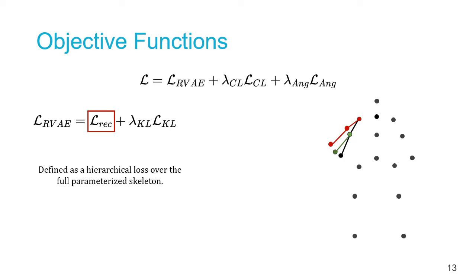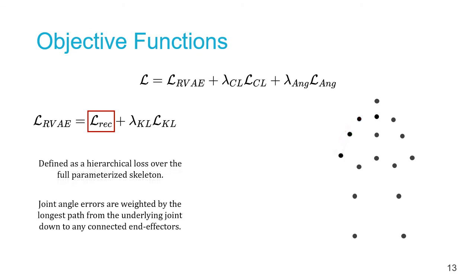However, applying forward kinematics in each time frame is computationally expensive. We therefore propose a hierarchical loss over joint angles which weights each joint's error based on its impact on the reconstructed pose. Here each weight is computed as the longest path from the underlying joint down to all of the connected end effectors in an average body skeleton.